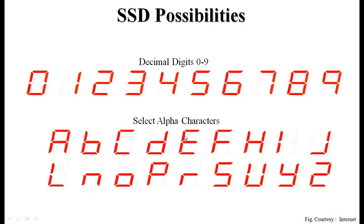The possibilities of representation are: we can represent integers from 0 to 9 on the seven segment display very easily. Different characters which can be displayed are also enlisted — a, b, c, d, e, f, h, i, z, l, n, o, p, r, s, u, y, and z — these alphabets or characters can also be represented on a seven segment display.